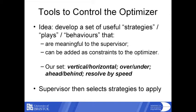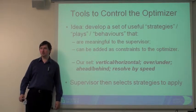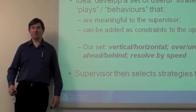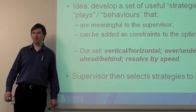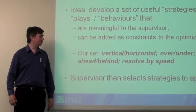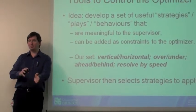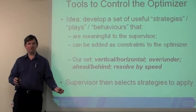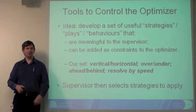The set we're looking at are fairly simple but interesting to translate: do you do things vertically or horizontally? Do you send someone over or under? Do you go ahead or behind someone else? And we also have the option to resolve by speed changes only. The supervisor has some interface to choose which strategies to apply to which conflicts or flights, and then the optimizer goes away and finds a solution accordingly. The supervisor makes high-level decisions - I want that to happen or not - and then the optimizer works out the very low-level decisions. The optimizer deals with X, Y, Z, and T; the human simply gets to deal with yes or no.